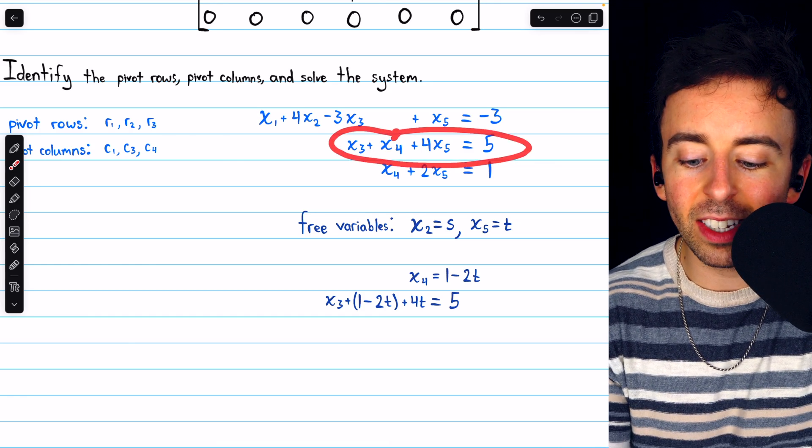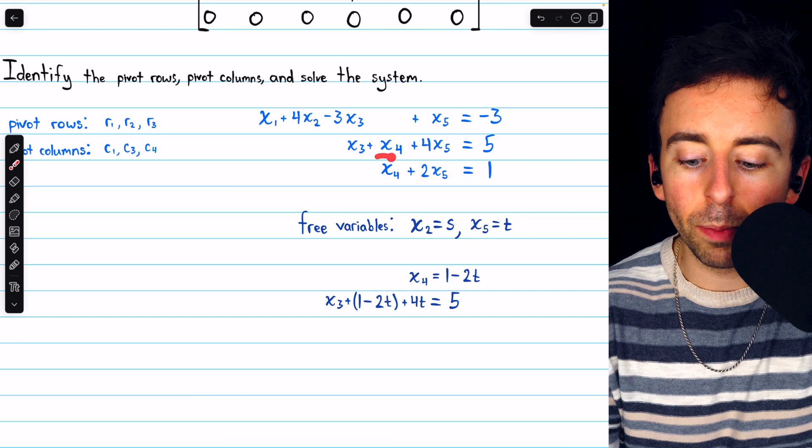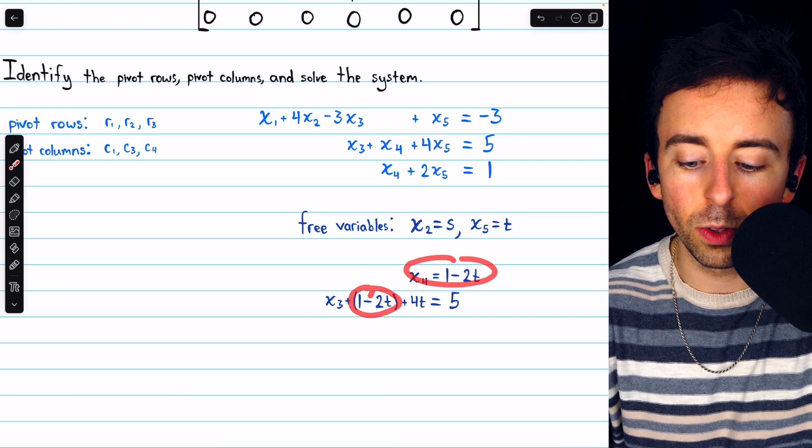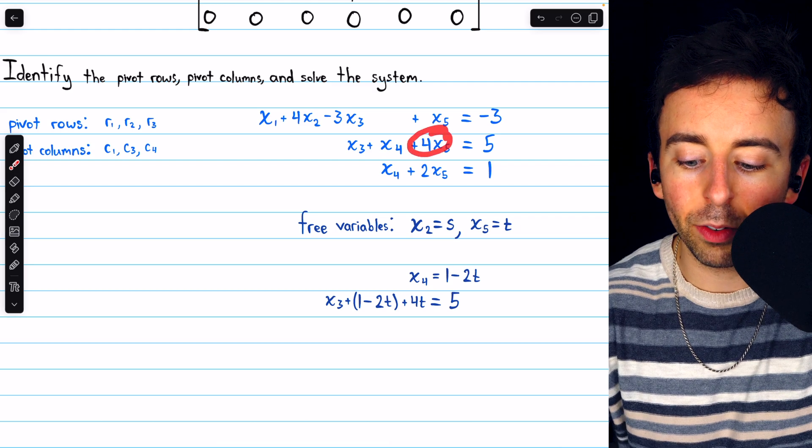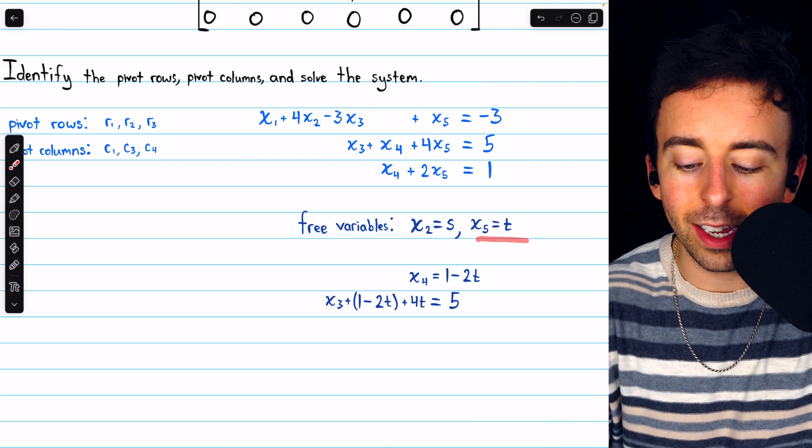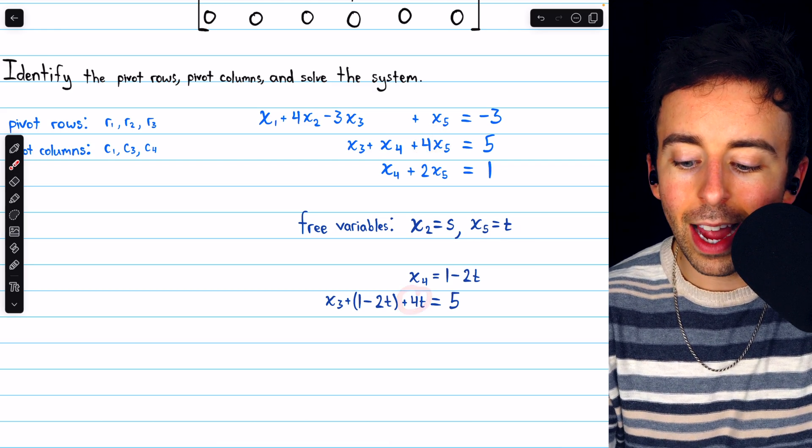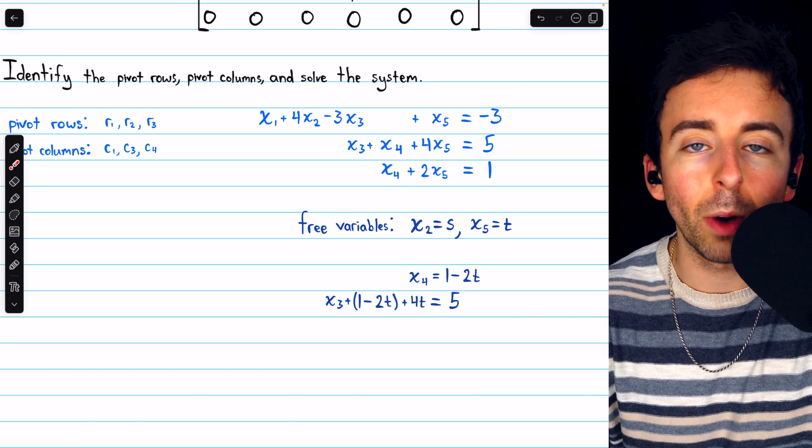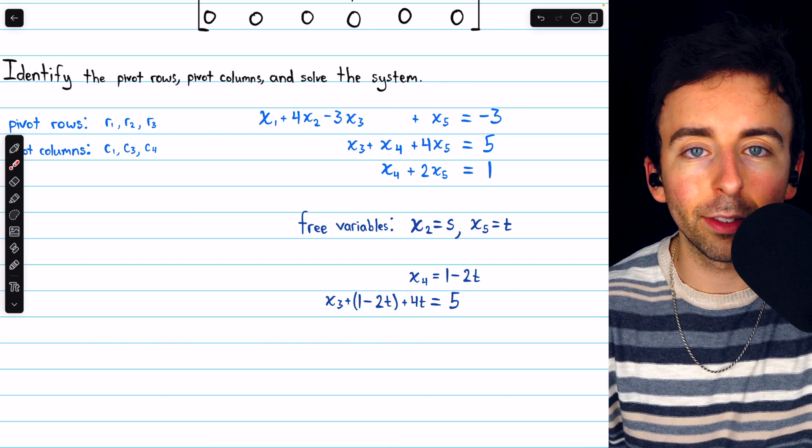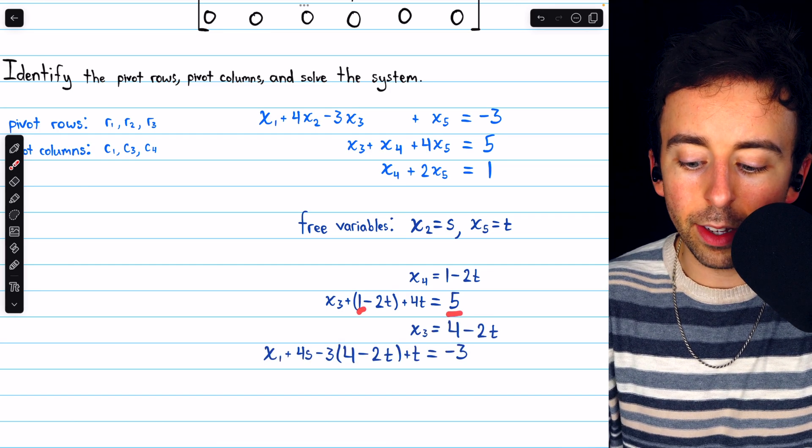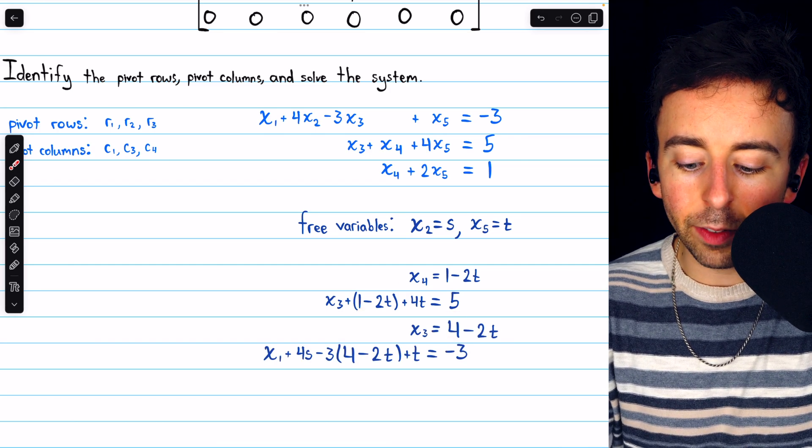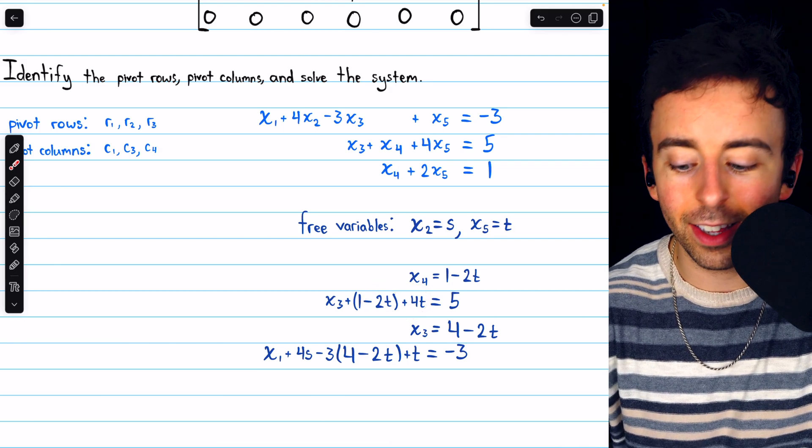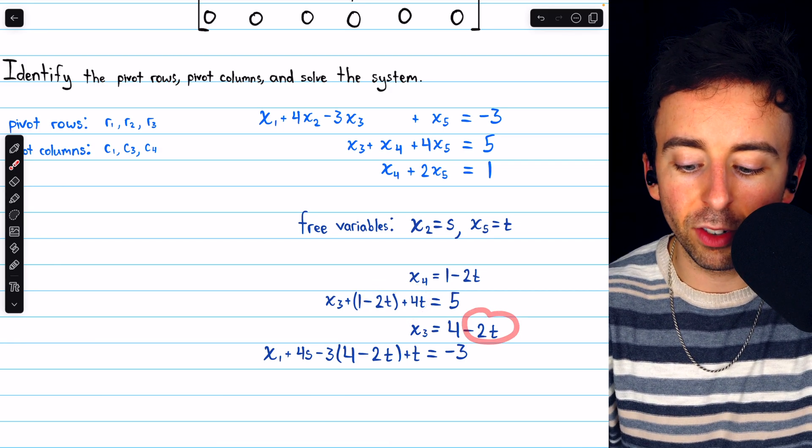Then, we can plug that into the preceding equation. x3 plus x4. Well, let's replace x4 with 1 minus 2t, and plus 4x5, but x5 is t, so that's plus 4t, and this equals 5. Then, we'll move everything except x3 over to the right side and thus solve for x3. 5 minus 1 is 4, and negative 2t plus 4t is positive 2t. Subtract that to the other side, and we have minus 2t.